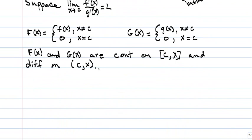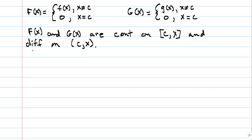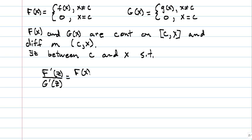Now, that being the case, we know that Cauchy's mean value theorem tells us that there exists a Z between C and X such that, but this is true, F prime of Z over G prime of Z is equal to F of X minus F of C over G of X, big G of X, minus big G of C. This is what Cauchy's theorem tells us.